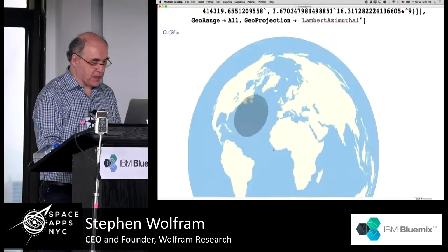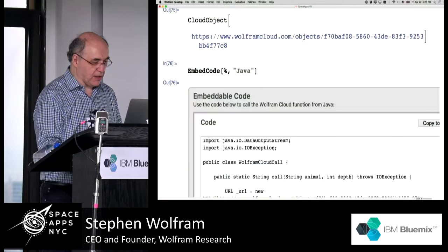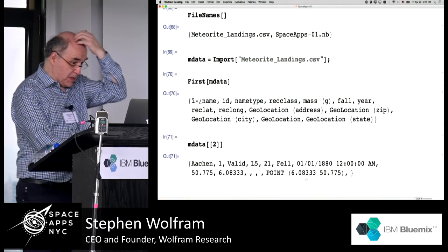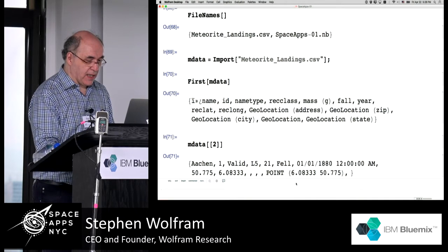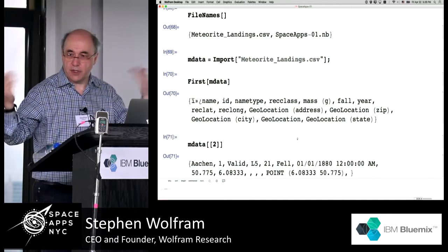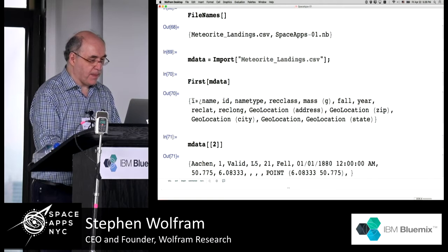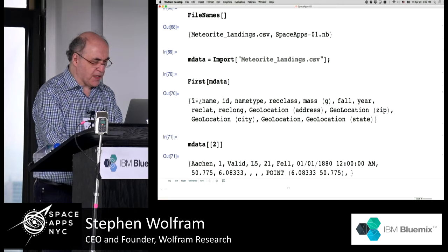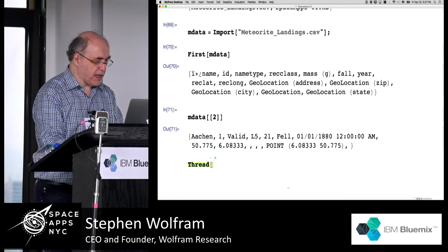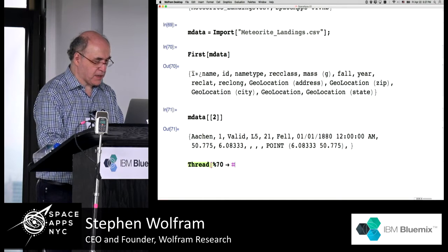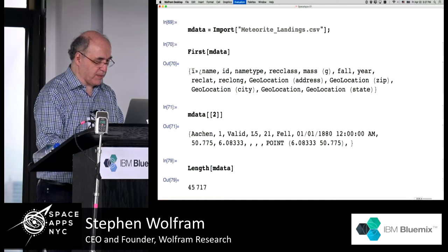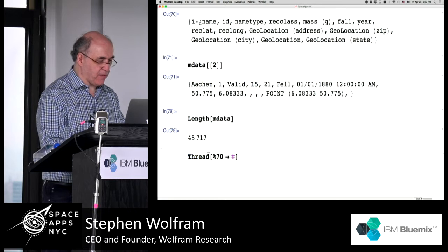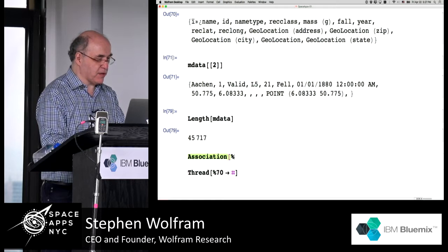Let's get down to business and do something with some NASA data. I have meteorite data. So I just imported the meteorite data — this is the general form of that data, it's kind of a mess. Let me start showing you what we would do with this data. It looks like the first element is a header and then there's a bunch of structured data underneath. Let me find out how much data there is: there's 45,000 lines of data. I'm going to take the first two lines of data and make this into what's called an association — an associative array.